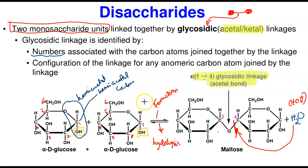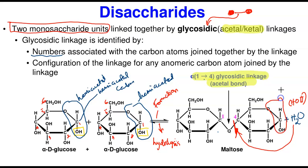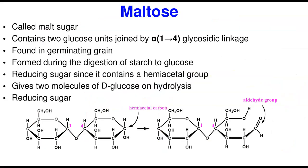Another important point before we move on: remember carbon one is also a hemiacetal carbon. When two glucose molecules join together, one of the hemiacetal carbons is used to form a glycosidic bond with the carbon four of the next one. In the new disaccharide, only one hemiacetal carbon remains free. Whenever a disaccharide has a free hemiacetal carbon, it is a reducing sugar — this bond can open up into an aldehyde and undergo reaction.